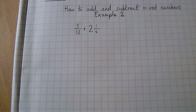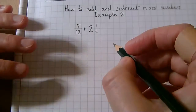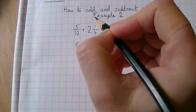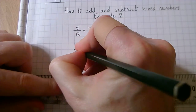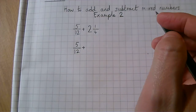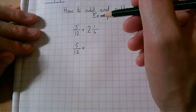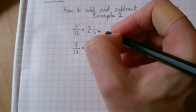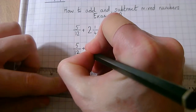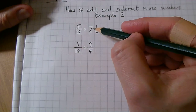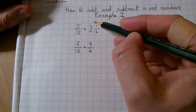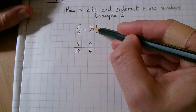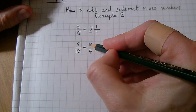5 twelfths add 2 and 1 quarter. The first thing we're going to do is change this mixed number into an improper fraction, so this fraction here stays the same. Bring the add sign down. Our mixed number of 2 and 1 quarter: to make that improper we do 4 times 2 add 1, which is 9, and the denominator stays the same. To explain why: in 1 whole there are 4 quarters, so in 2 wholes there are 8 quarters, add 1 — that's denominator times whole number plus numerator — giving 9 quarters.